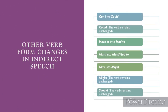Here are some other verb form changes in indirect speech or reported speech. Can changes into Could. Could does not change — it remains unchanged in indirect speech. Have to changes into Had to. Must changes into Had to, or you can keep Must. May changes into Might, and Might remains unchanged in indirect speech.